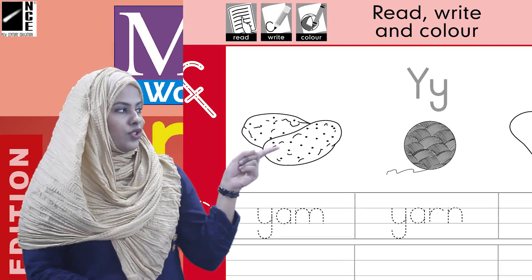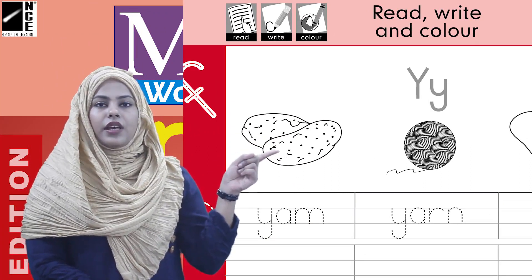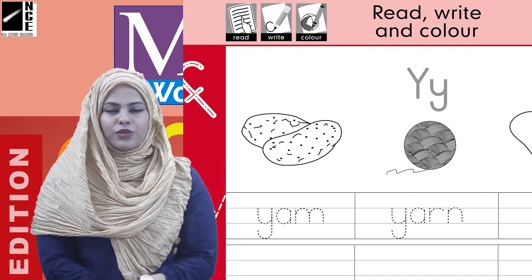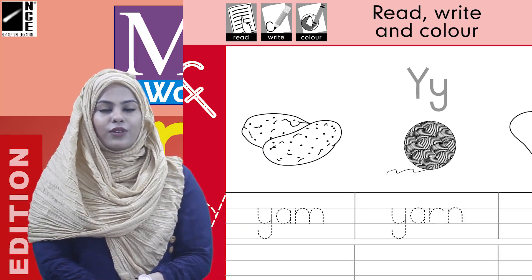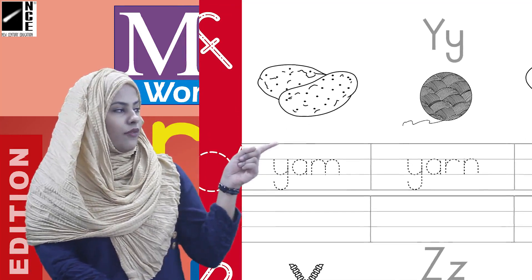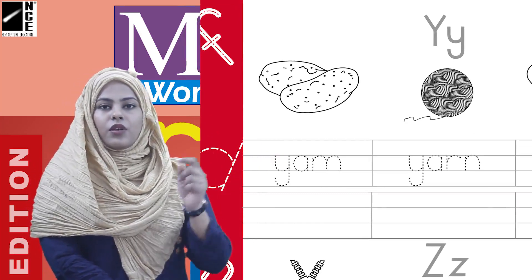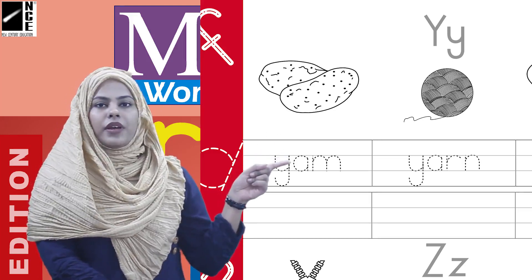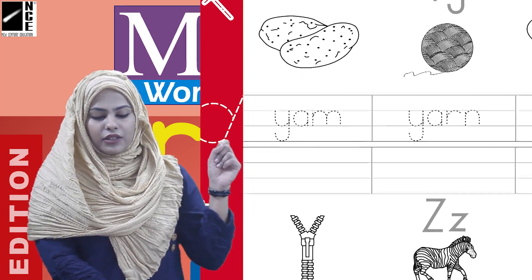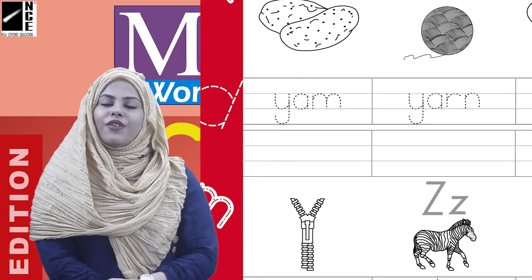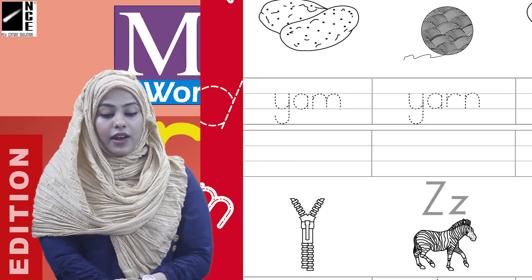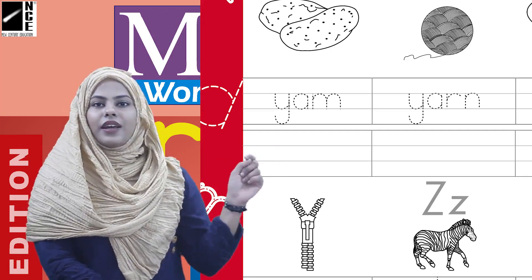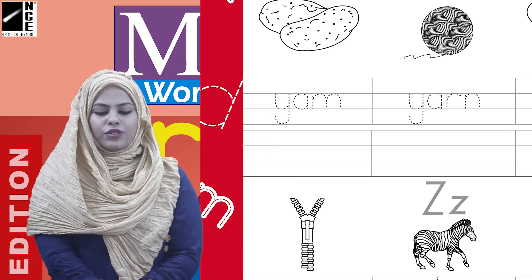Let's see the first picture. What is this? It's a yam. Yam shakarkandhi ko bolte hai — it's the sweet potato that you boil and eat, and vendors also sell it outside. So we have to trace the word yam, which is Y-A-M. Trace it with the help of a pencil, and then fill in the blank below by writing the same spelling. Most importantly, learn this spelling — it's very easy!